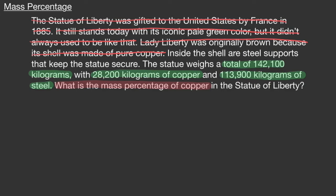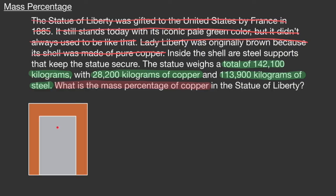Our first step in solving a problem is to construct a simple model of what is being described. If we make a very simple model drawing of the Statue of Liberty — let's say it's a box shape — on the surface we have copper, and inside the statue we have steel. The steel part would weigh 113,900 kilograms, and the copper part would weigh 28,200 kilograms, with the entire mass at 142,100 kilograms. As problems grow in complexity, taking the description and making a model picture is always advisable.